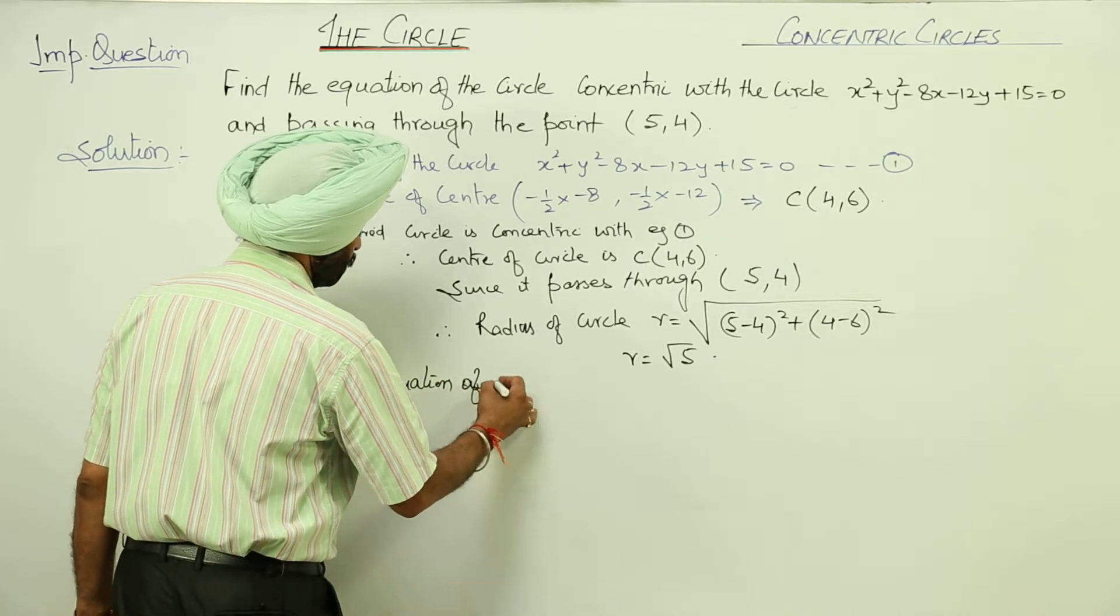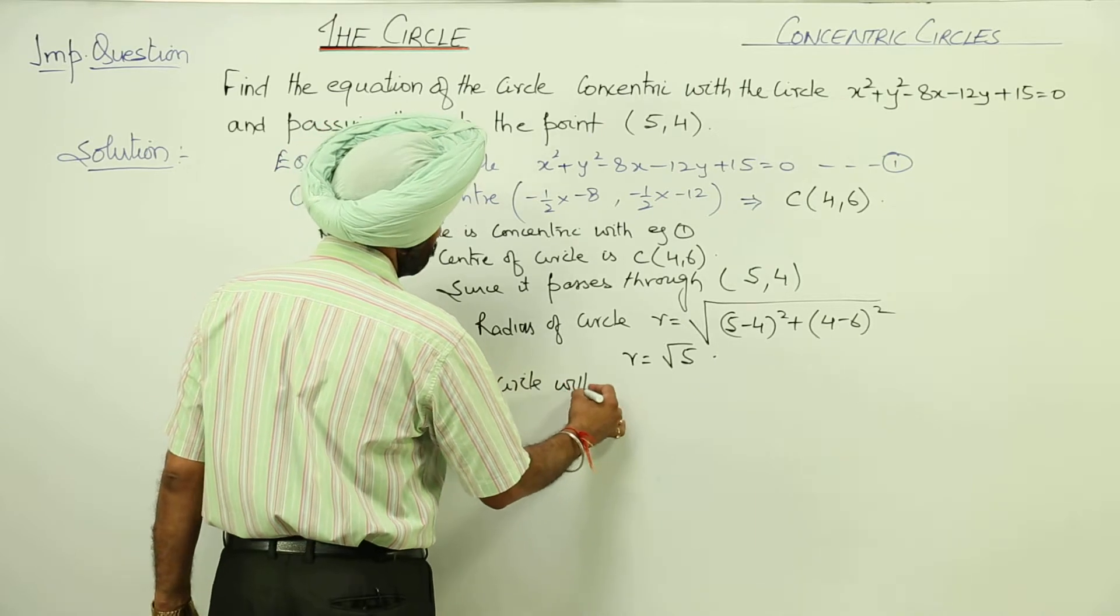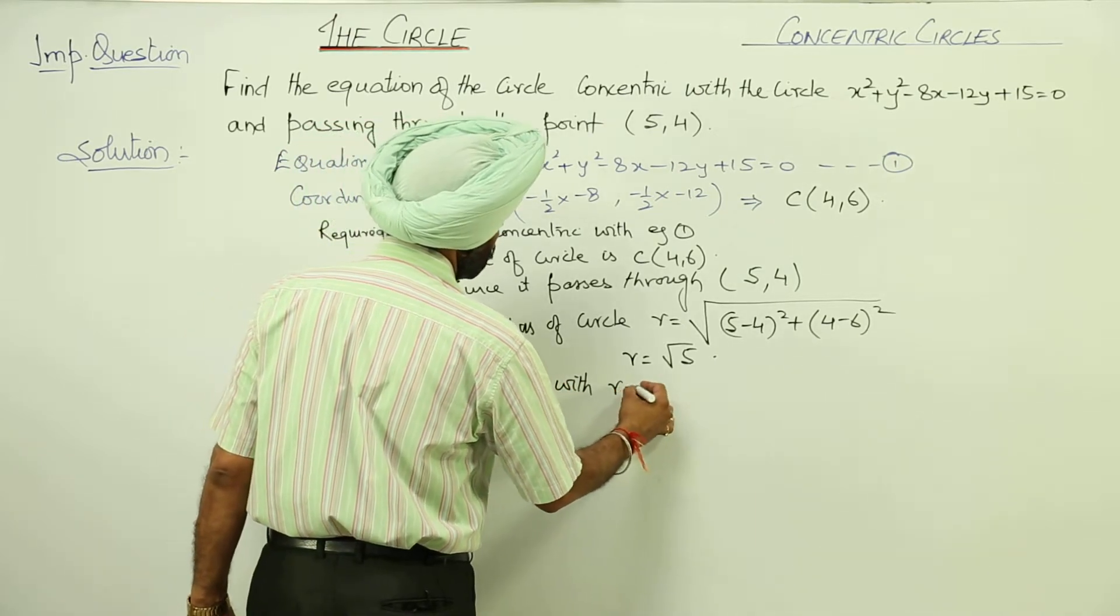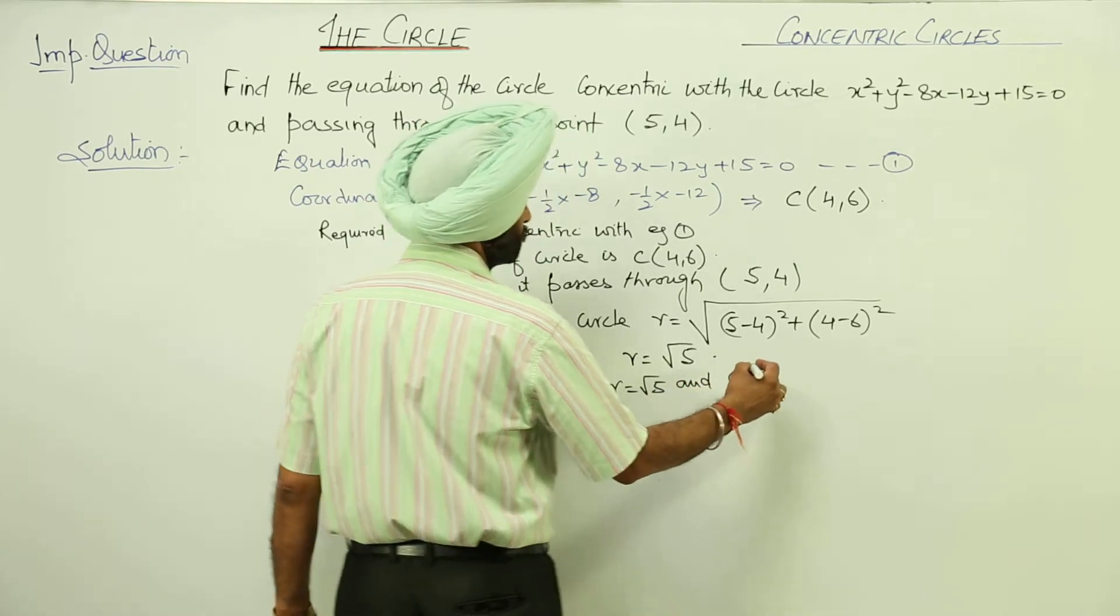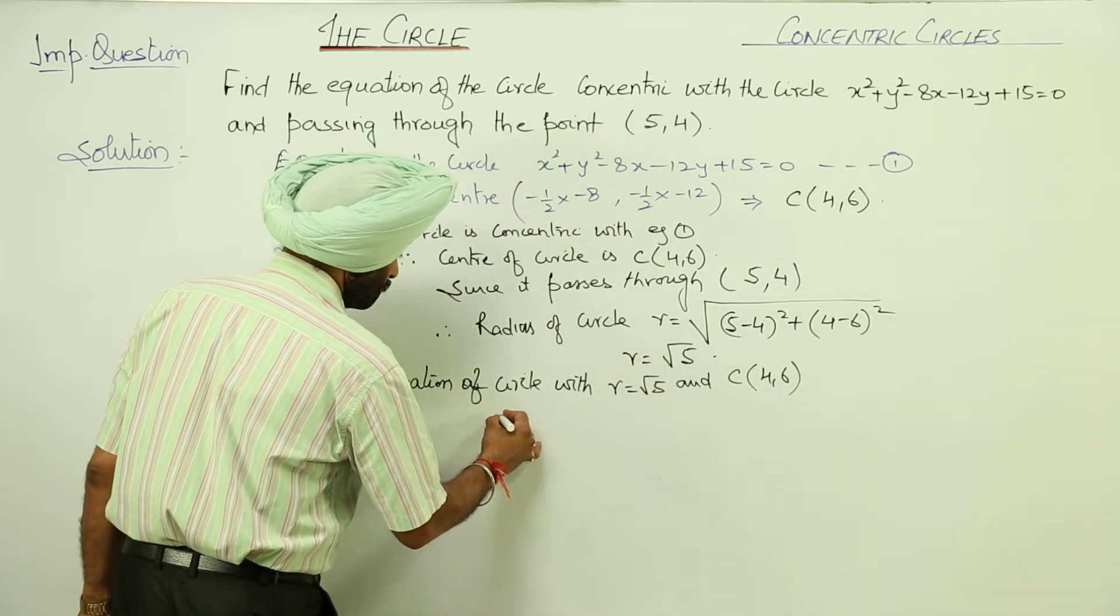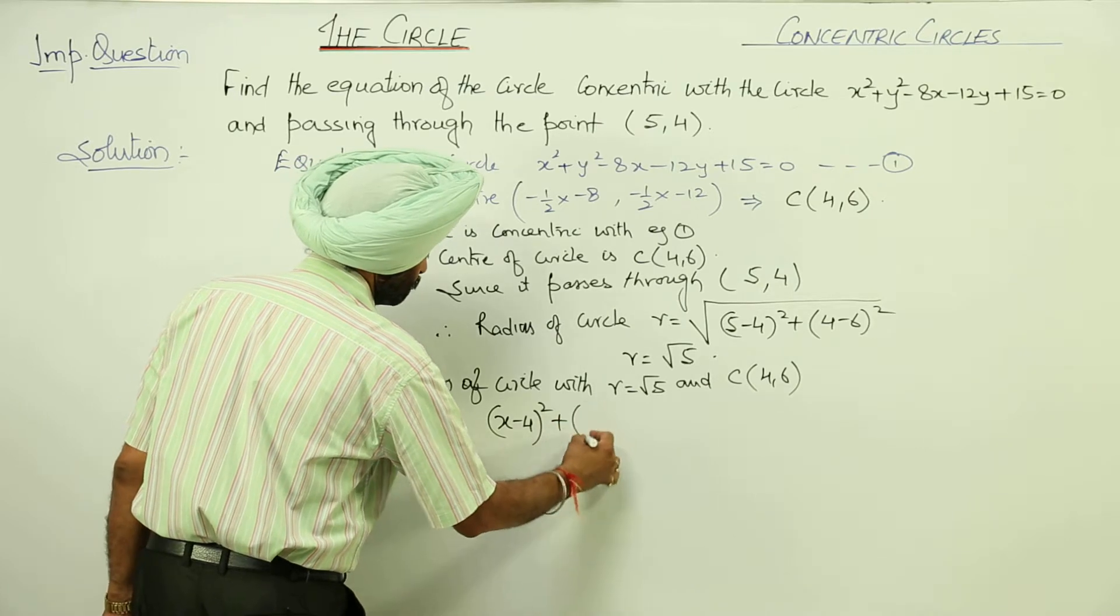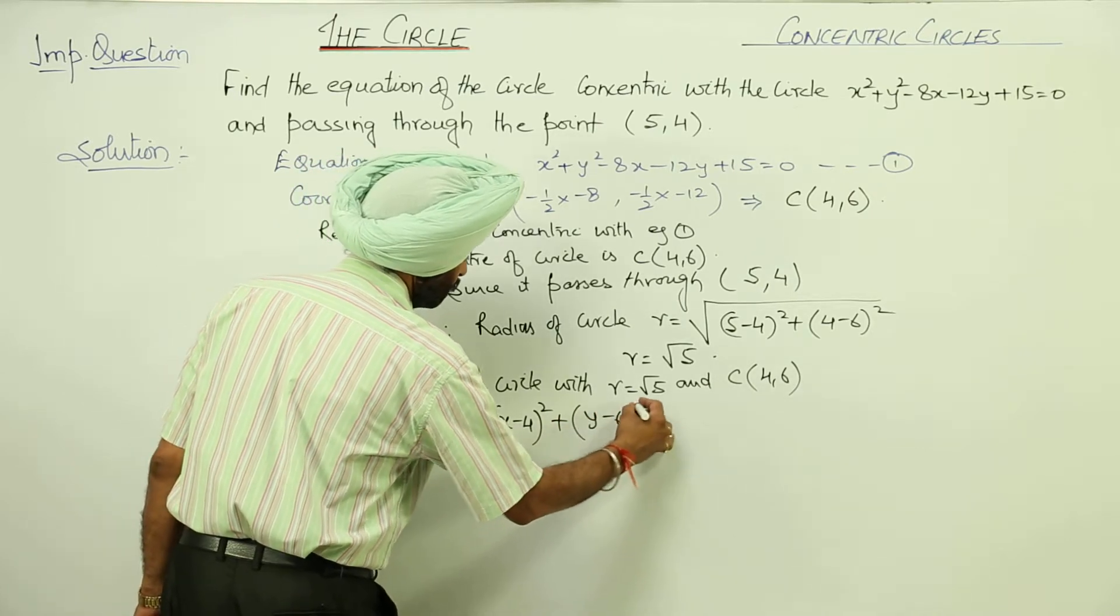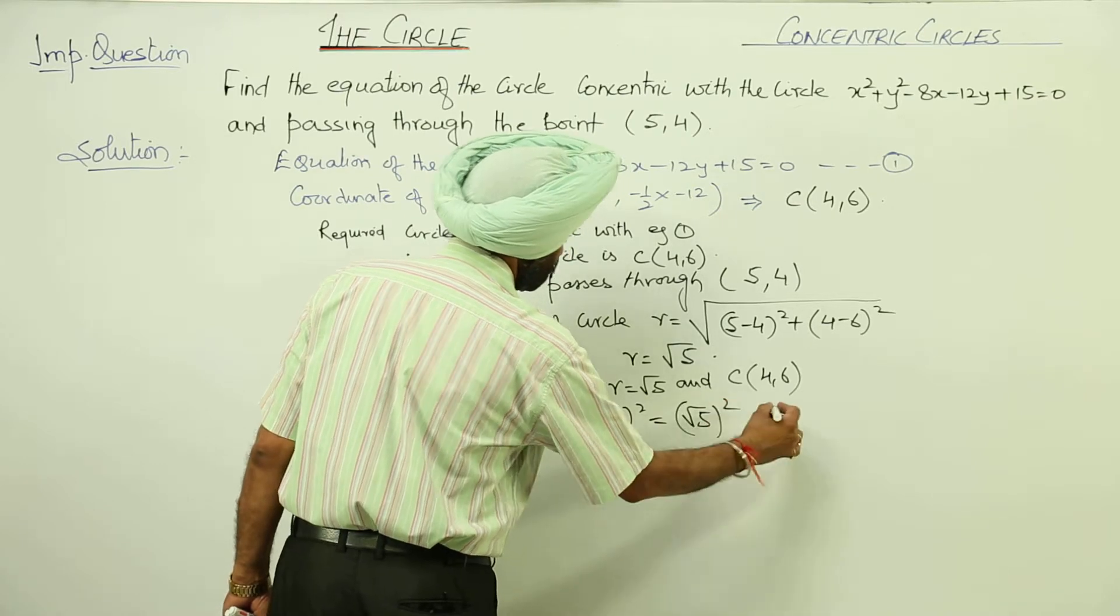Equation of circle with r = √5 and coordinates of center (4, 6) is (x - 4)² + (y - 6)² = (√5)².